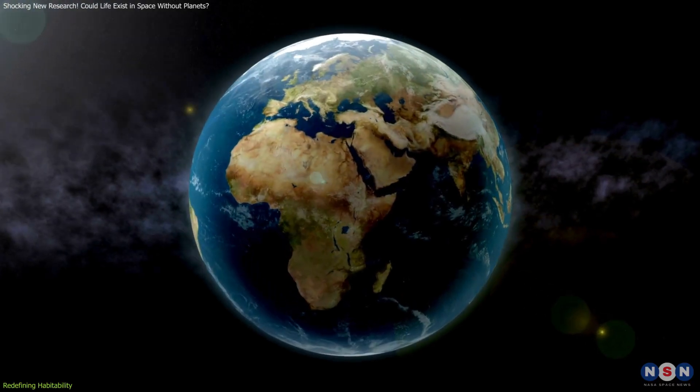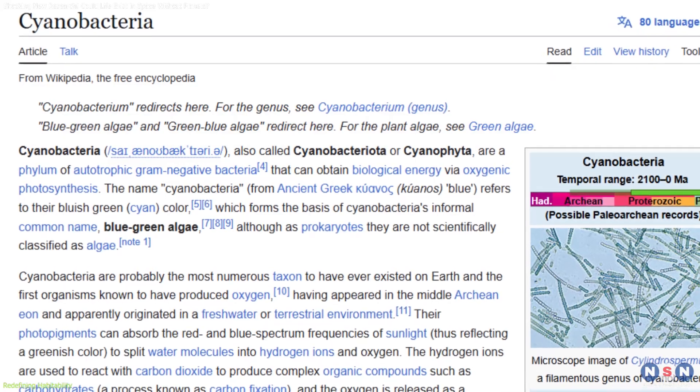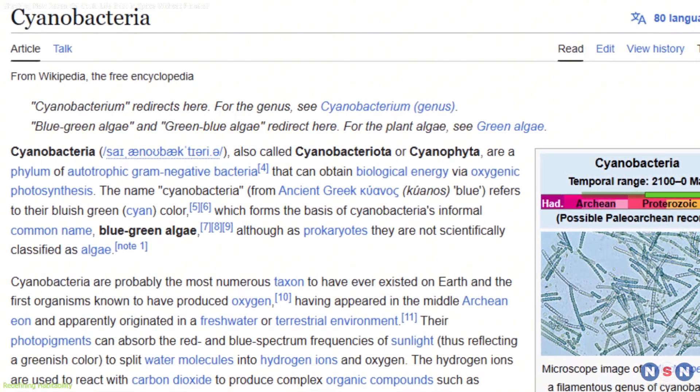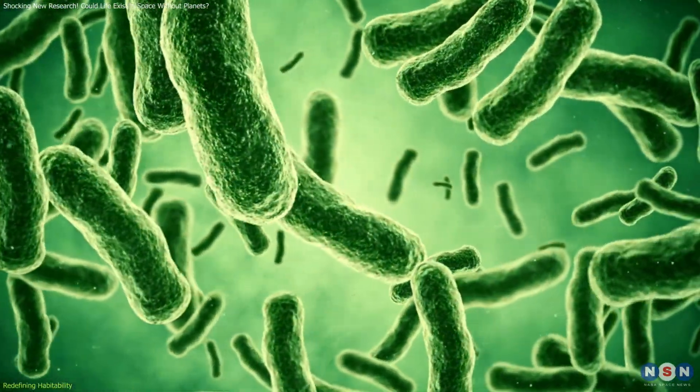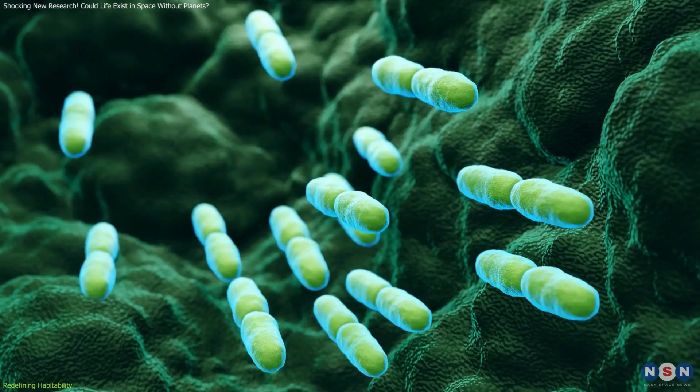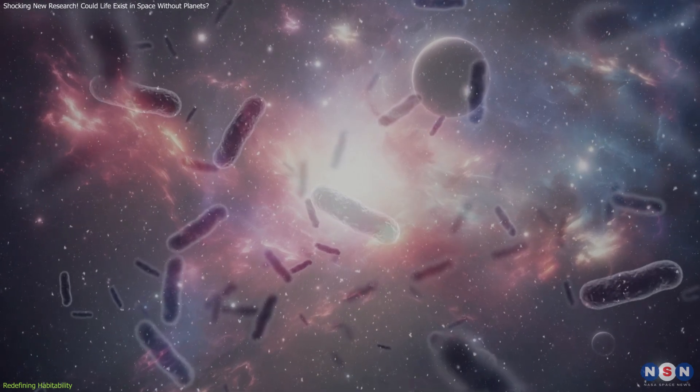Examples from Earth provide compelling evidence of life's adaptability. Cyanobacteria, some of the earliest forms of life, thrive in extreme conditions, including low atmospheric pressure. These microorganisms adapt efficiently, demonstrating survival mechanisms that could translate to extraterrestrial environments.